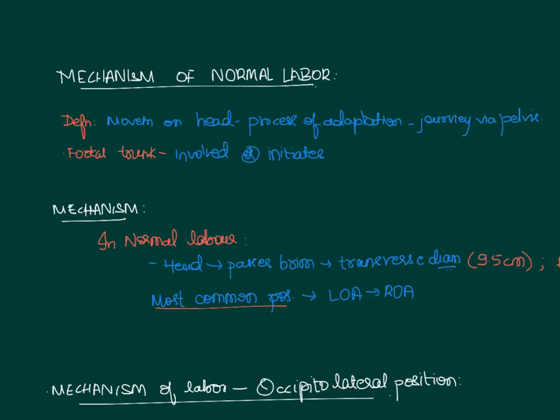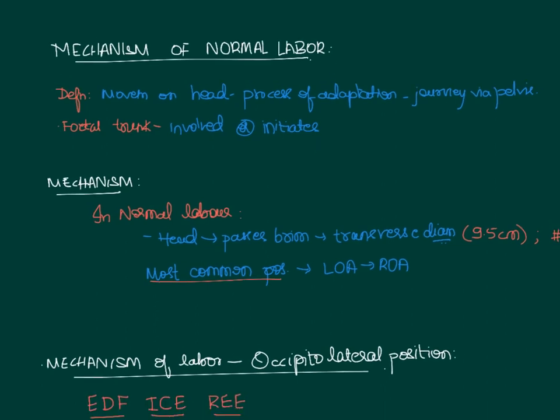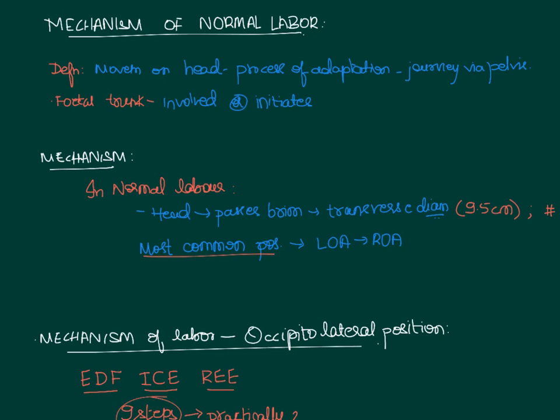Let's study about the mechanism of normal labor. The definition of mechanism of labor is the series of movements which the head undergoes in the process of adaptation when it is traveling through the journey of the maternal pelvis. Remember that the head is the very important part which is going to take the lead here, and the fetal trunk is just involved in the normal labor or it might initiate some of the steps of the normal labor.